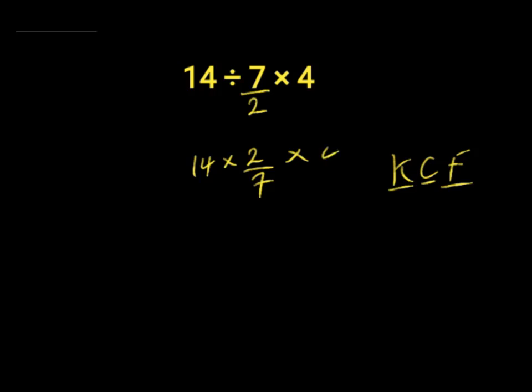Then we multiply by 4. 7 cancels to give us 1, so we have 2 times 2 times 4. 2 times 2 gives us 4, then 4 times 4 gives us 16.